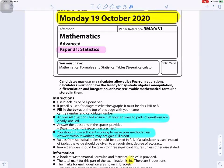Statistics, paper 31, mathematics, Monday 19 October 2020. Answer all questions and ensure that your answers to parts of questions are clearly labeled. You should show sufficient working to make your methods clear. Answers without working may not gain full credit.